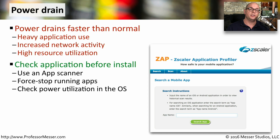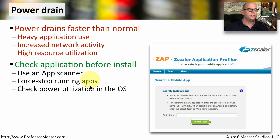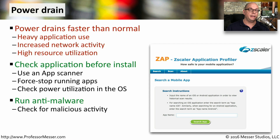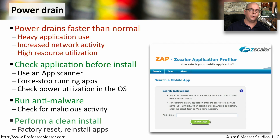One thing you can do is check applications before you install them. There are a number of third-party application scanners that can give you an idea of whether an application is safe or not. If you do have applications running that you need to stop, you can force stop those and then check the power utilization features in your operating system to see what applications are using the most CPU. It might be worthwhile to run an anti-malware application on your mobile device to check for any malicious software. And if you're concerned about things that could have been installed on your system, you might want to perform a factory reset and a clean installation of all the applications.